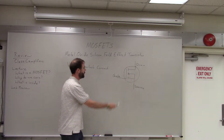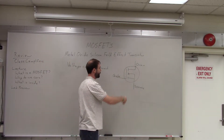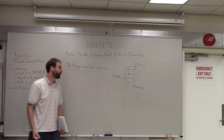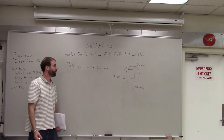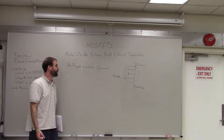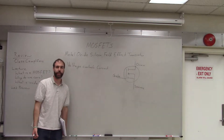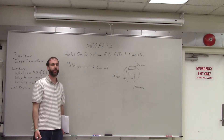The symbol for a MOSFET looks something like this. It has three terminals, just like a BJT had three terminals, but the names are different. This is called the gate, this is called the drain, and this is called the source. So a MOSFET is a special type of transistor where voltage controls current, and it has these terminals: the gate, the drain, and the source. You might ask, why would we use MOSFETs if we already have BJTs? Why not just stick with those?